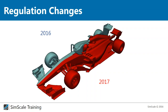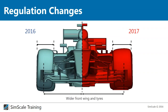Looking at the front wing changes — both cars seen from the top, 2016 on the left and 2017 on the right — the most obvious change is that the front tires and front wing are much wider. The front wing was increased by 200 mm in width, and the front tire changed from 245 mm to 305 mm. Not only did the width of the front wing change, but also the proportions — the wing now has a slightly different shape, which we can see clearly from above.